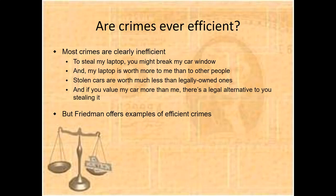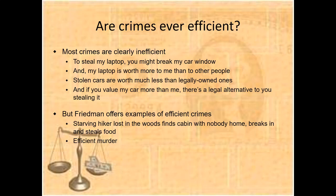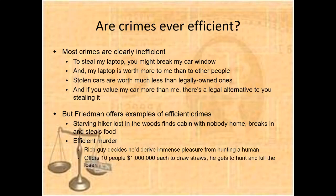Most crimes are clearly inefficient: to steal a laptop you might break into a car, and the laptop is worth more to me than to the thief; stolen cars are worth much less than legally owned ones; and if you value my car more than I do, there is a legal alternative to stealing it. However, Friedman offers examples of efficient crimes. For instance, a starving hiker lost in the woods finds a cabin with nobody home, breaks in, and steals food.